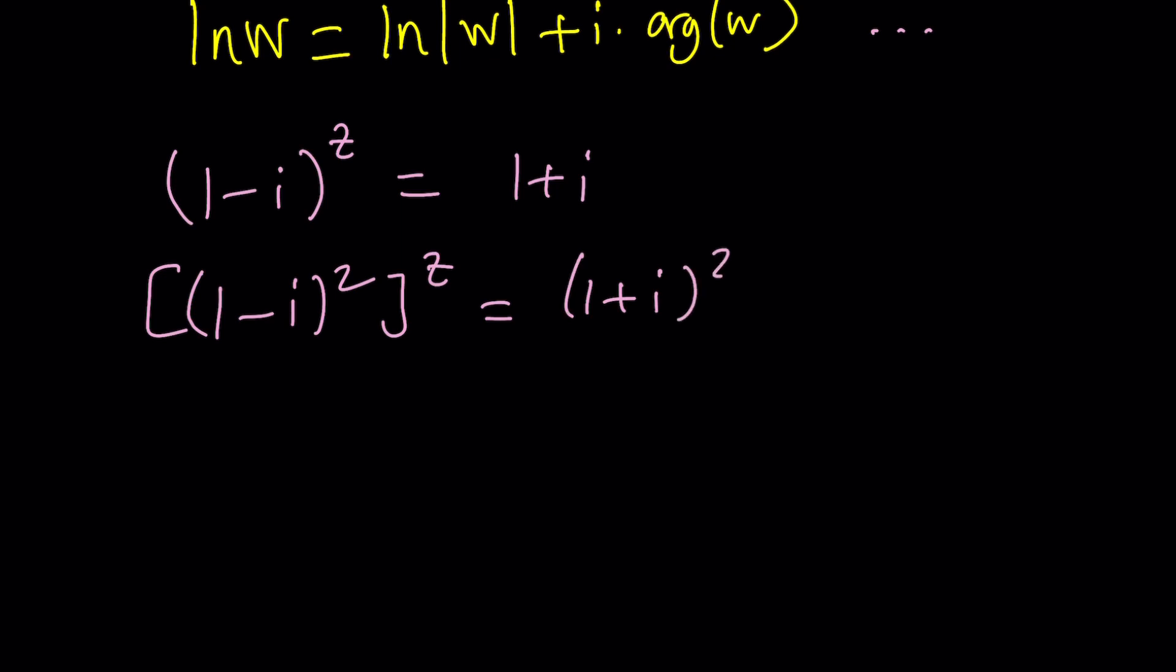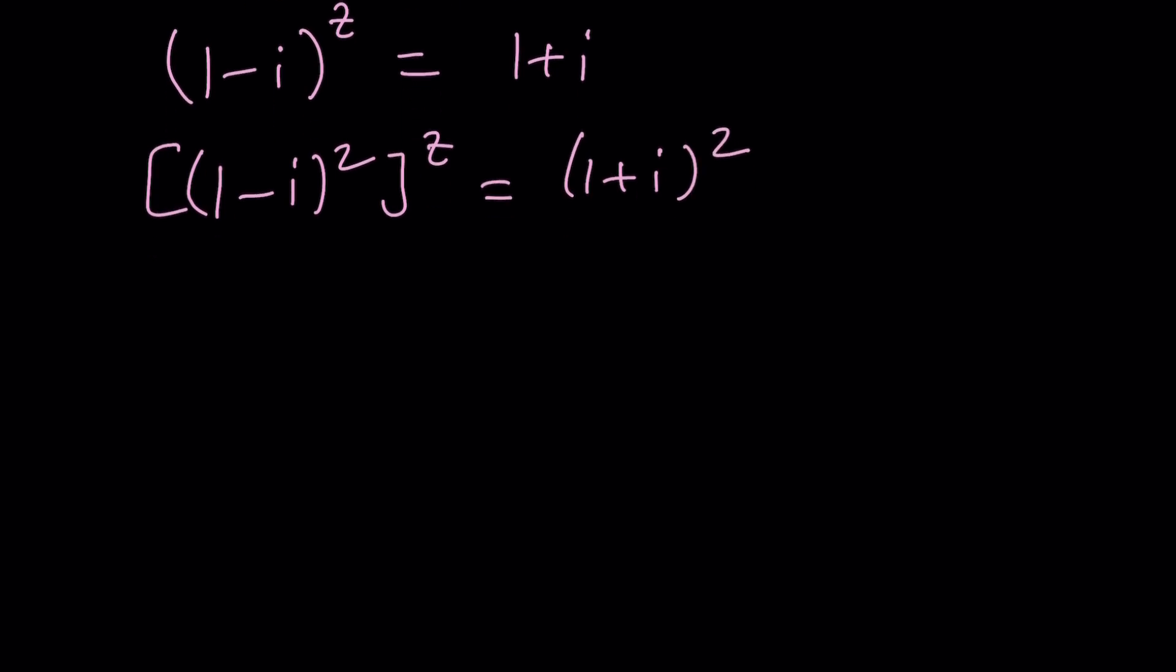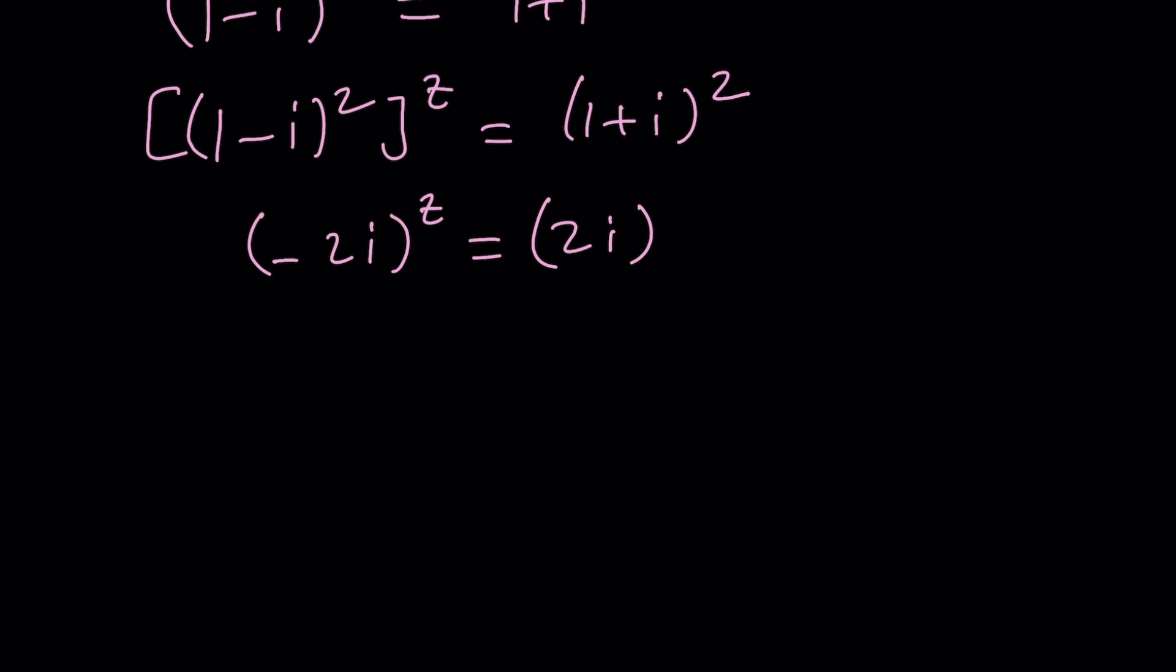But you got to be very careful because when you square both sides, you might be introducing extraneous solutions. This is negative 2i to the power z and then this is 2i, not 2i to the power something. And then you might be thinking, if I raise negative 2i to the power negative 1, is that going to work? Nope.